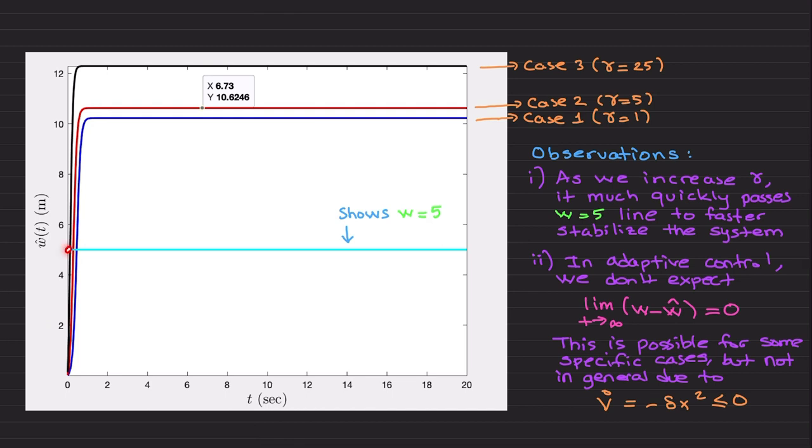In all cases it passes quickly, but if you look at gamma equals to 25, it passes this line much more quickly compared to the blue line for gamma equals to 1. This means that if you pass this line quickly, you faster stabilize the system around the zero equilibrium point. X converges to zero.